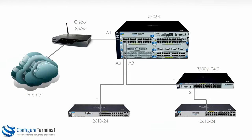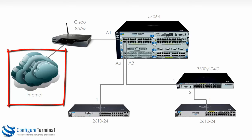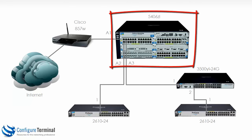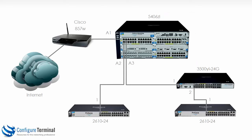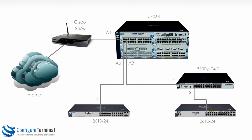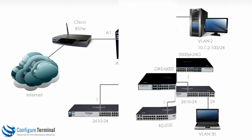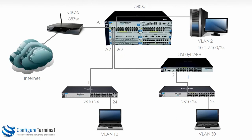This is the E-Series lab topology. Firstly there is a Cisco 857W router acting as a DHCP server and connecting the internal network to the internet. We then have a 5406 ZL switch acting as a layer 3 router, on which we'll later create VLANs and do inter-VLAN routing. We also have a 3500 YL 24G switch and two 2610 switches. Later we'll introduce PCs and servers in separate VLANs, enabling communication between all devices.